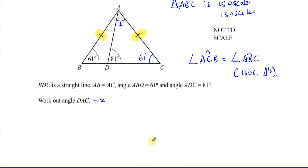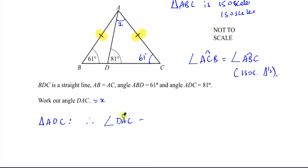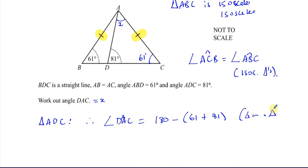Once we've worked that out, it's easy. We now consider triangle ADC. Looking at triangle ADC, there's only one angle we don't know, which is X — we already know the other two. Therefore, angle DAC, which is X, equals 180 minus the sum of 61 plus 81. Angles in a triangle add up to 180.